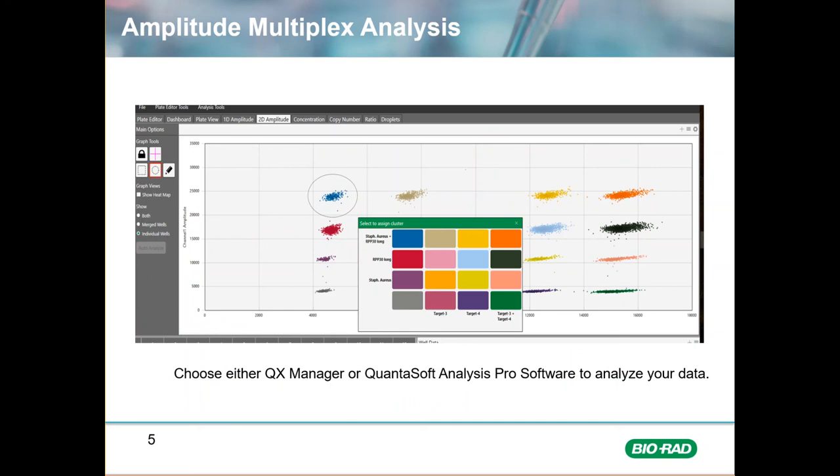The analysis is simple when using Quantasoft Analysis Pro or QX Manager. After opening and selecting amplitude multiplexing in the assay information box, the software will provide a guide to make clustering easy. Just follow the guide to label each cluster.